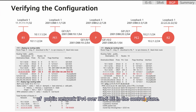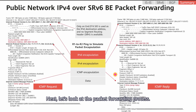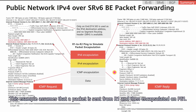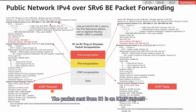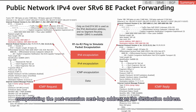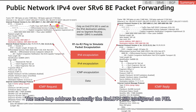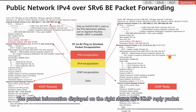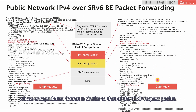That's all about the implementation of public network IPv4 over SRv6BE in the control plane. Next, let's look at the packet forwarding process. Let's ping R2 from R1 to simulate packet encapsulation. A packet is sent from R1 and then encapsulated on PE1. The packet sent from R1 is an ICMP request for which IPv4 encapsulation is performed on R1. After receiving the packet, PE1 performs SRv6 encapsulation, encapsulating the post-recursion next-hop address as the destination address. The next-hop address is actually the End.DT4 seed configured on PE2. The packet information also shows R2's ICMP reply packet, whose encapsulation format is similar to that of the ICMP request packet.